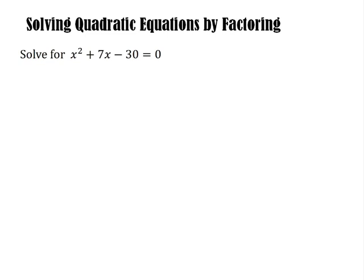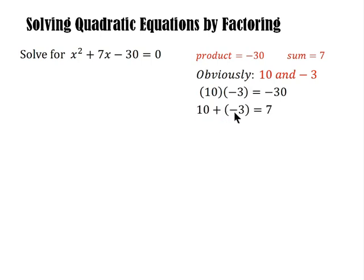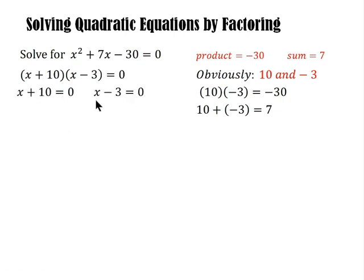Next example: solve x squared plus 7x minus 30 equals zero. We need factors where the product is negative 30 and the sum is 7. Think of two numbers satisfying this condition. The answer is 10 and negative 3, because 10 times negative 3 is negative 30, and 10 plus negative 3 equals 7. So the factors are 10 and negative 3.